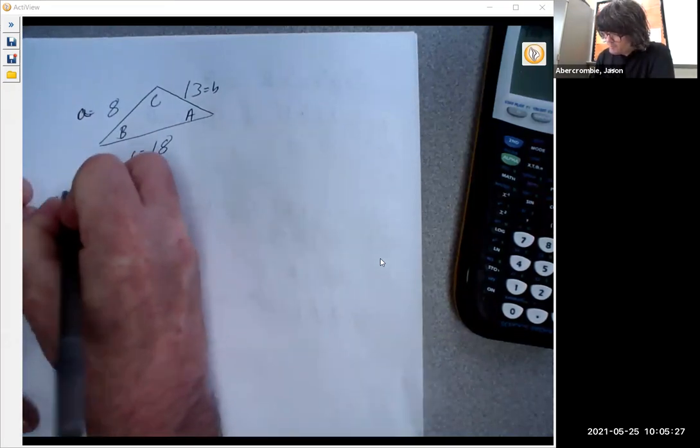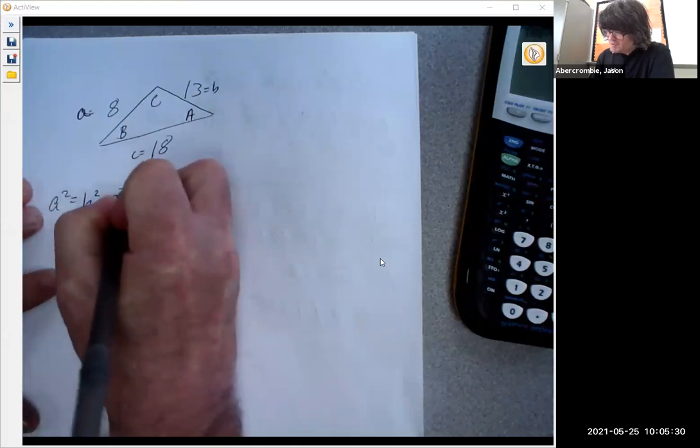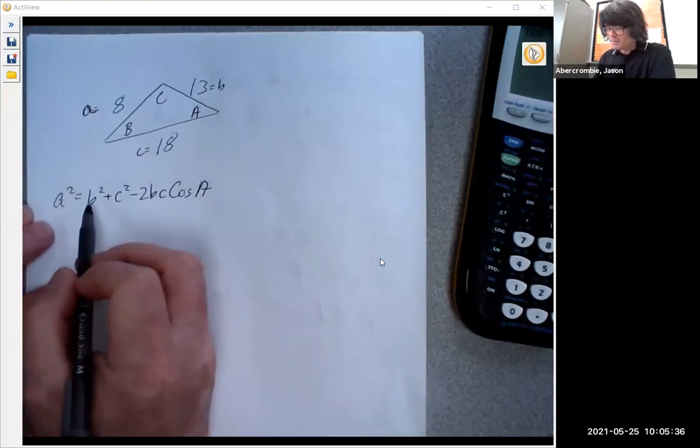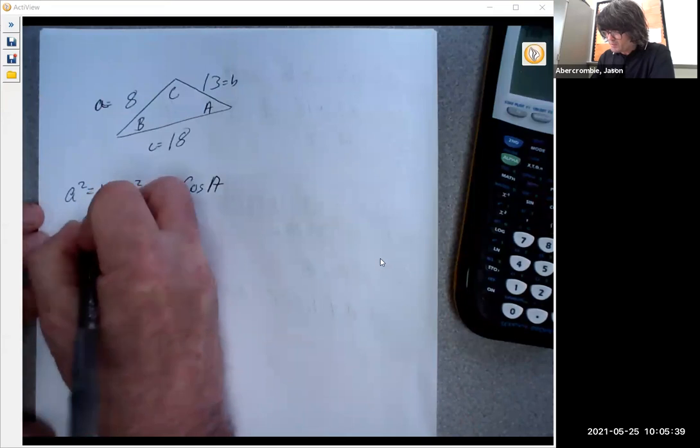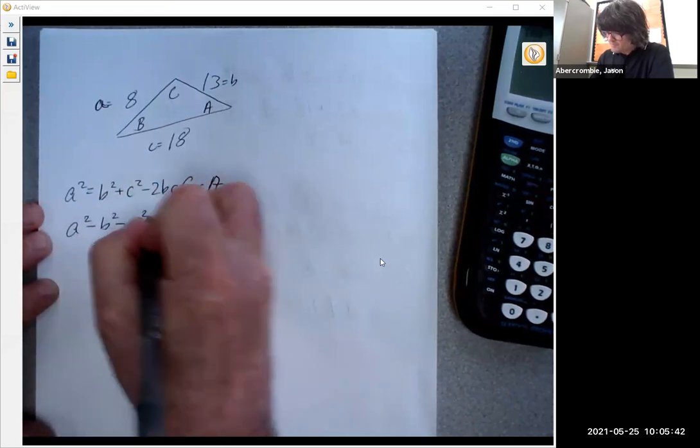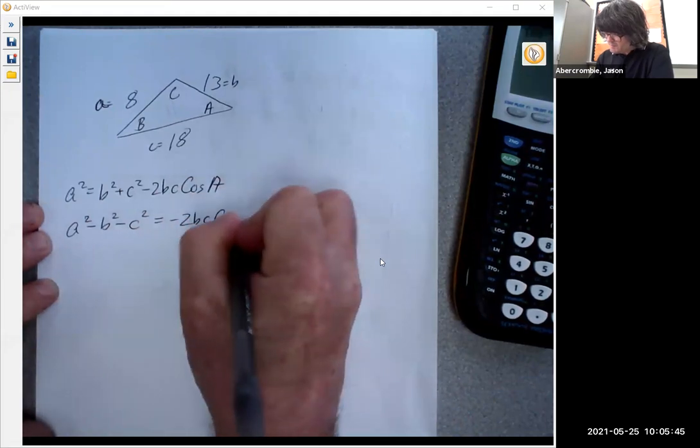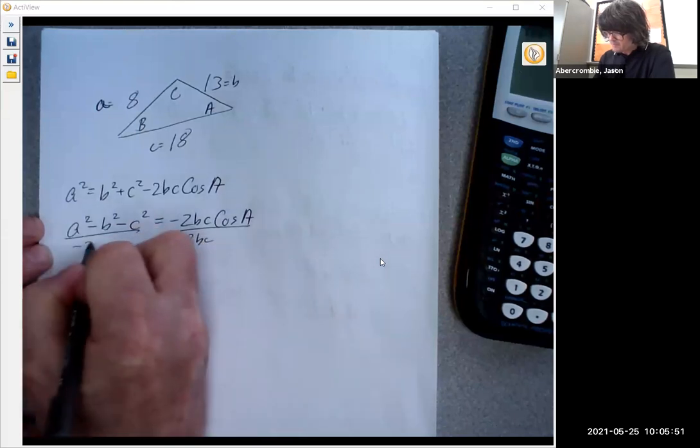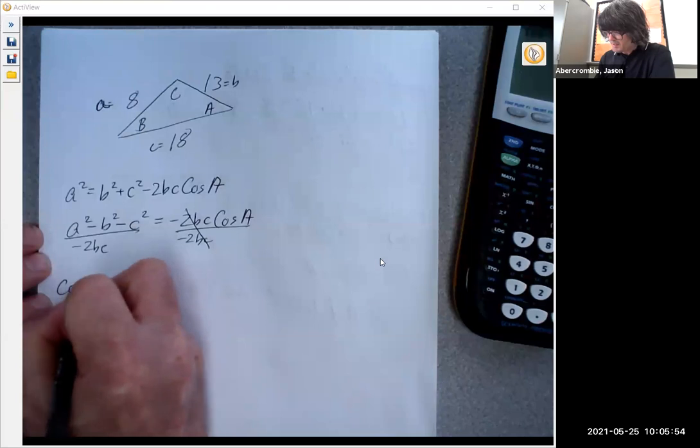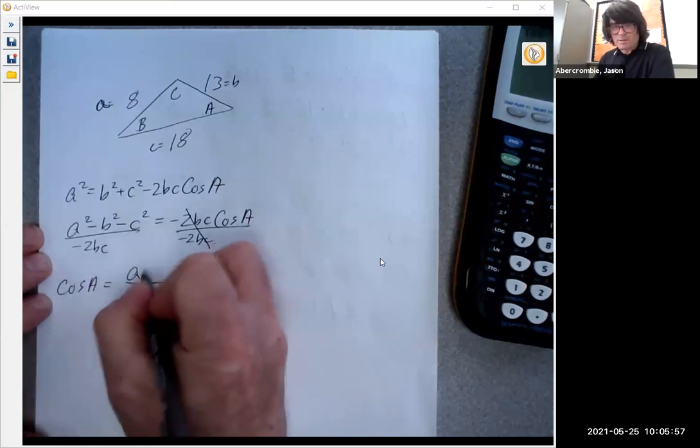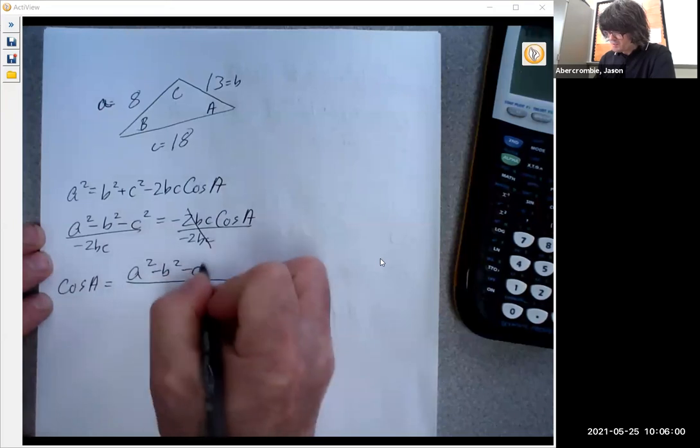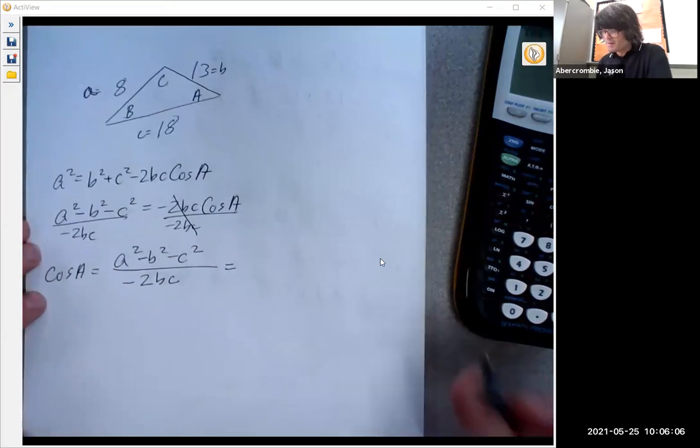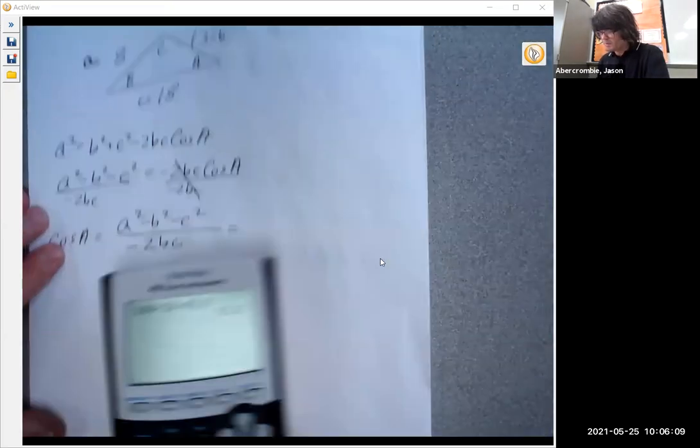And we'll say A squared equals B squared plus C squared minus 2BC cosine A. Like we did a minute ago, I'm going to take away B squared, take away C squared, so we get this. Minus 2BC cosine A. And then we'll divide by negative 2BC. Cancel that out. So cosine A is A squared minus B squared minus C squared over minus 2BC. And believe it or not, this is actually another form of the law of cosines you can write to find an angle, but we won't spend too much effort on that for now.